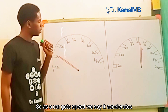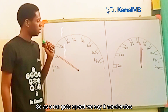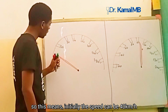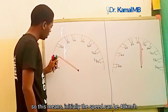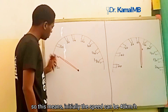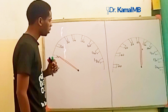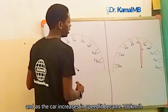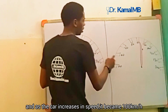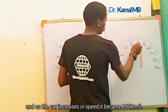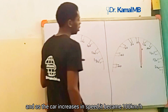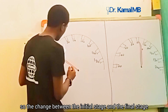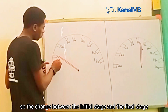As a car speeds up, we say it accelerates. Initially, the speed can be 40 km per hour, and as the car increases in speed, it becomes 100 km per hour.